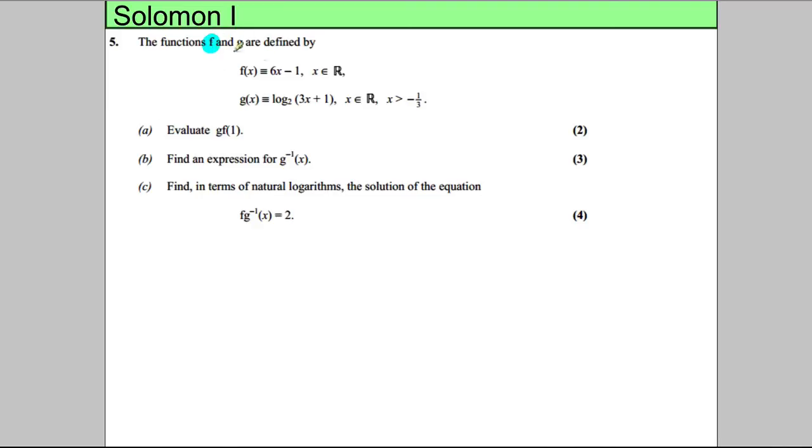In this question we have a function f which is a linear function, and a function g which is a logarithmic function to the base 2. We're told that x can be any real number for f, and x can be any real number but x has to be bigger than negative one-third for function g.